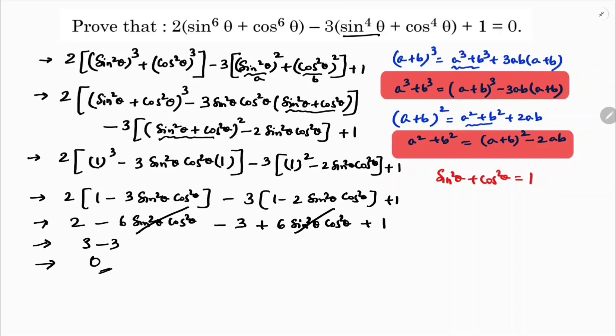So with the help of a plus b whole cube I got a cube plus b cube, and with the help of a plus b whole square I got a square plus b square. Just by changing those two terms into the form of a cube plus b cube and a square plus b square, on simplification I got the answer 0.